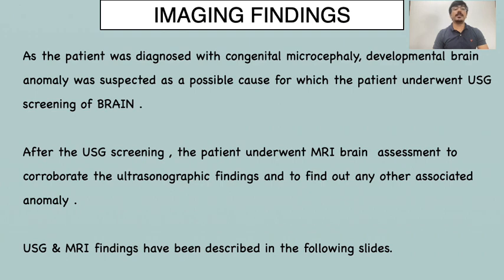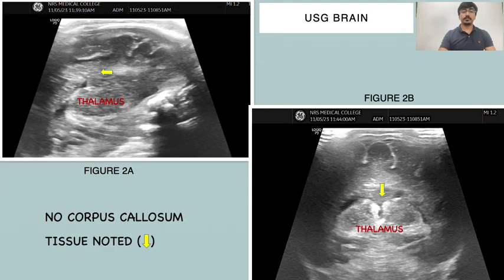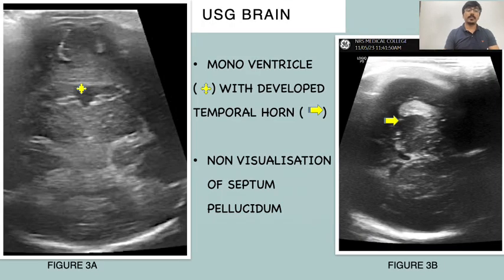USG brain: Coronal sonogram shows non-visualization of falx cerebri anteriorly, incomplete inter-hemispheric fissure, fused frontal lobes, and partial fusion of the thalami. USG brain images also show non-visualization of corpus callosum at midline. Additionally, a monoventricle with developed temporal horn is noted, along with non-visualization of the septum pellucidum.